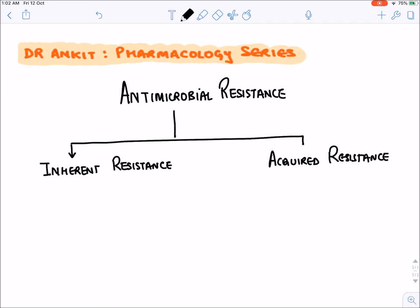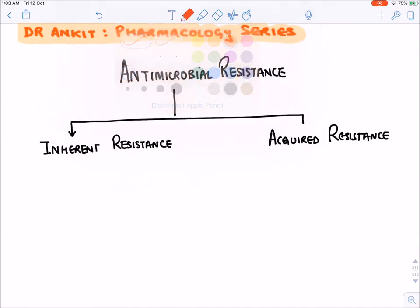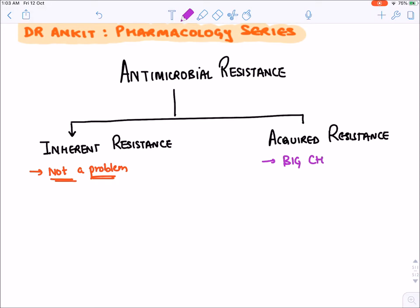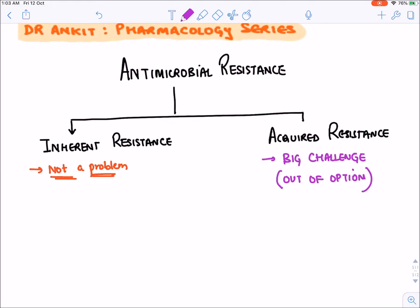Inherent resistance is not a problem for us, because if a bacteria is not sensitive to an antimicrobial we will not use that antimicrobial — we will use a different group. But acquired resistance is a very big problem or challenge for us, because we are already having very few options to kill a bacteria, and if a bacteria becomes resistant over time we will be out of options.